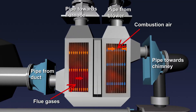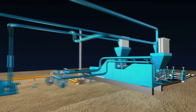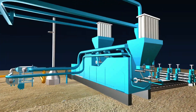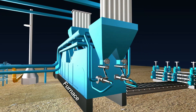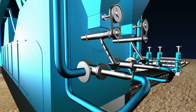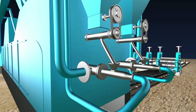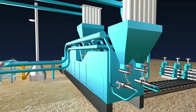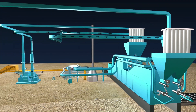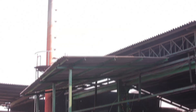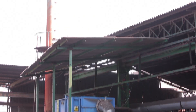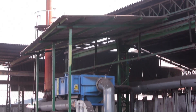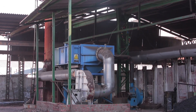In the process, inlet combustion air from the atmosphere is preheated using waste gas. The preheated combustion air is fed directly into the burner. The result is saving in terms of fuel, increase in flame temperature, and improvement in furnace efficiency.